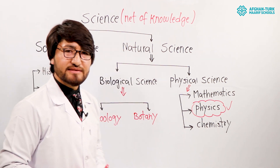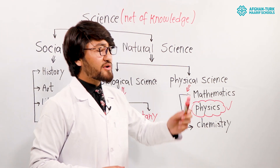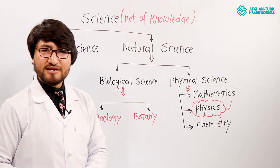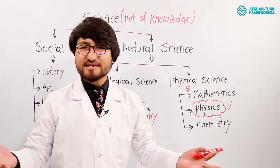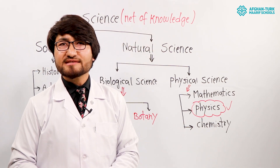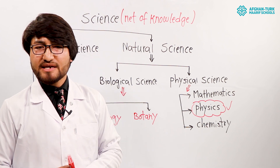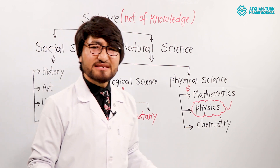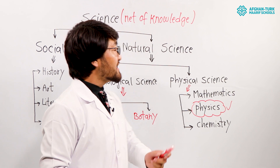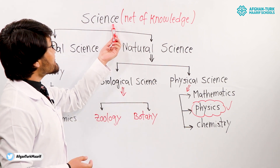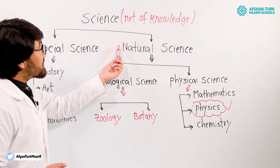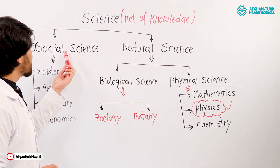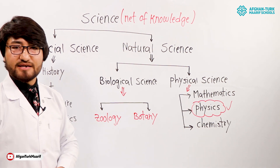What is science? Science is a net of knowledge. You can say, in simple words, science means net of knowledge. Science is divided in two parts: natural science and social science.